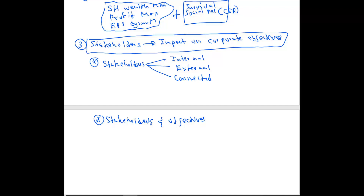If you take the management, their objectives could be getting high remuneration, good bonuses, and increments. If you take the government, they might have objectives like collecting taxes from companies and how many employment opportunities companies are opening up to the country. Simply, you should know the different stakeholders and their different objectives.